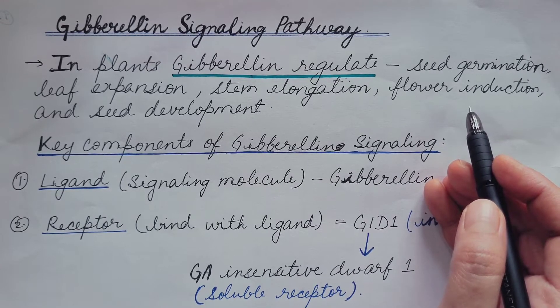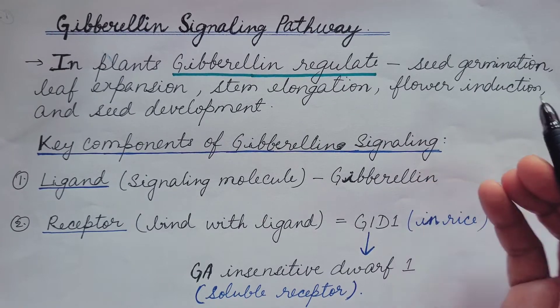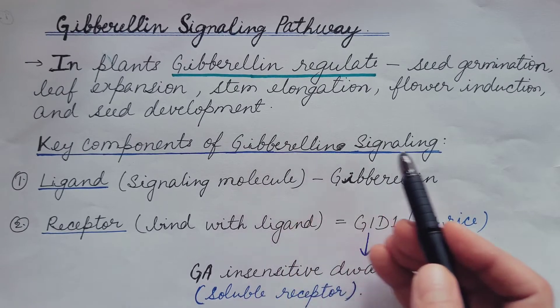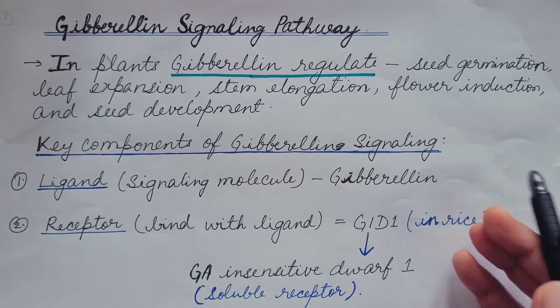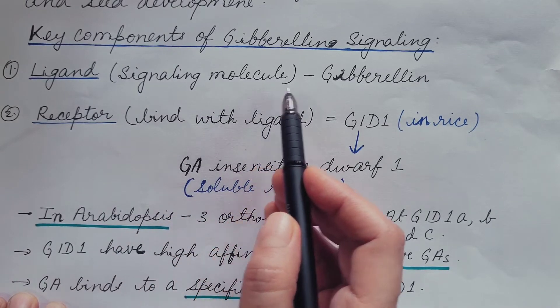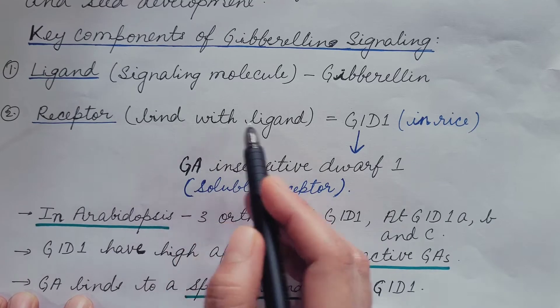Like all signaling pathways, gibberellin signaling pathway also has certain key components. Let us discuss them one by one. First is ligand, the signaling molecule. Here it is gibberellin.